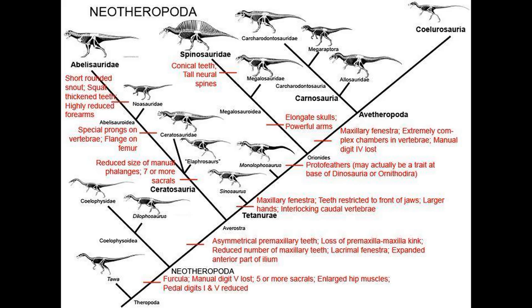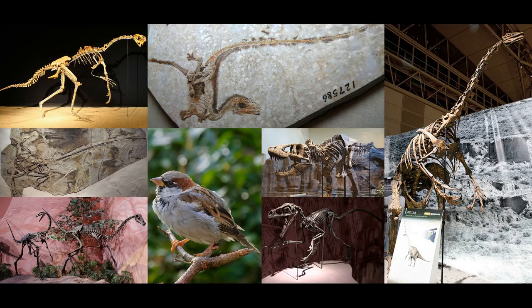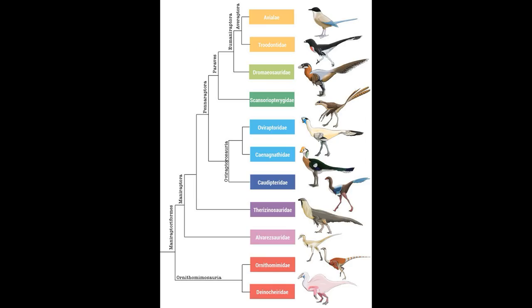To retrace our steps in Theropoda, we went through Neotheropoda, Avarostra, Tetanurae, Avatheropoda, Coelurosauia, Tyrannoraptora, Maniraptoriformes, Maniraptora, Pennaraptora, Paraves, Eumaniraptora, and stopped at Aviale.